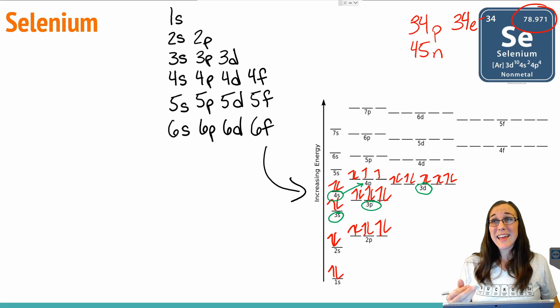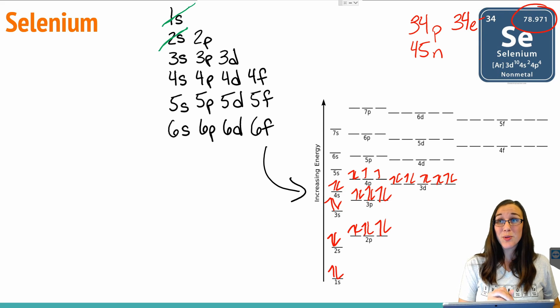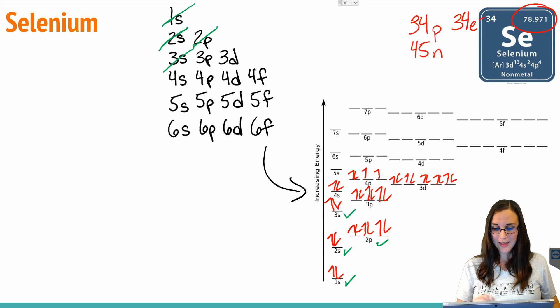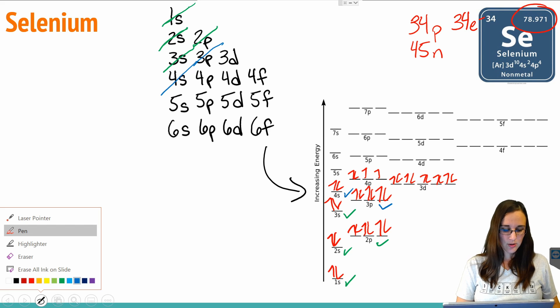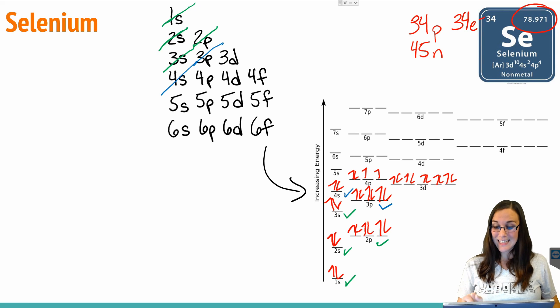In this case we have 34, so let's try filling. We've got 1, 2, 3, 4, 5, 6, 7, 8, 9, 10, 11, 12, 13, 14, 15, 16, 17, 18, 19, 20, 21, 22, 23, 24, 25, 26, 27, 28, 29, 30, 31, 32, 33, 34. So 34 is where we needed to stop. We've got 34 electrons in this orbital filling diagram that represents selenium.